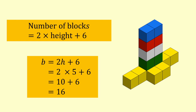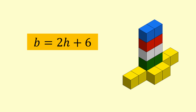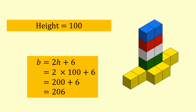This tower is 5 blocks high, so the expression is: blocks equals 2 times height, which is 5, so 2 times 5 is 10, plus 6 — the extra 6 blocks on the bottom layer. This comes to 16, which we know to be the correct answer. Now we can use this formula to find out how many blocks we would need for any height of tower. If we wanted a tower to be 100 high, we would need 2 times 100, plus 6, which comes to 206.